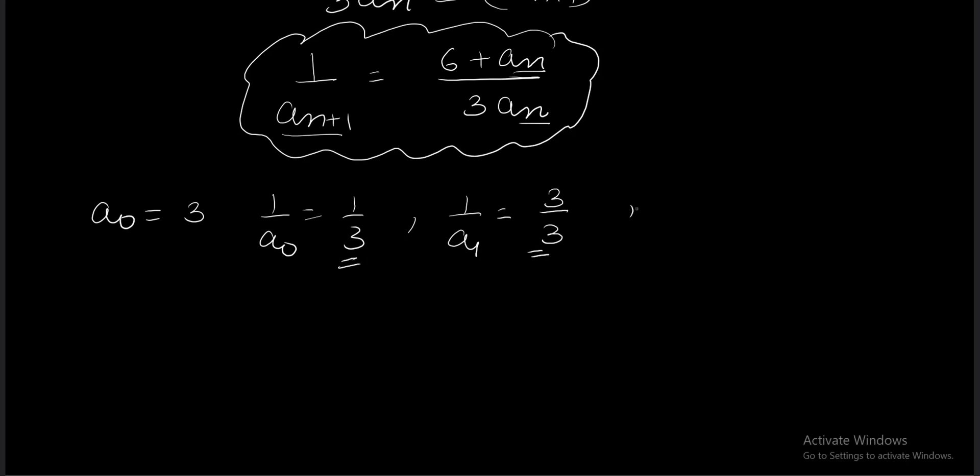Now 1/a1 = (6 + a0)/(3a0) = (6 + 3)/(3×3) = 9/9 = 1. For 1/a2, we have (6 + a1)/(3a1) = 7/3. For 1/a3, we have (6 + 3/7)/(3×3/7) which simplifies to 15/3. Similarly, 1/a4 = 31/3, and so on.